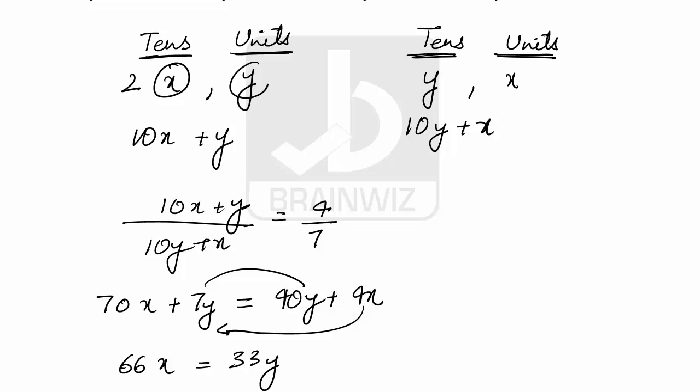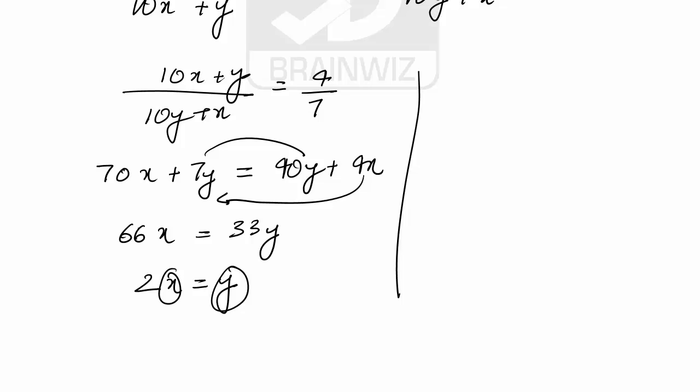That means 2 times the tens digit is same as y, that is the units digit. Now students, let's try to assume the units and tens, that is x and y.